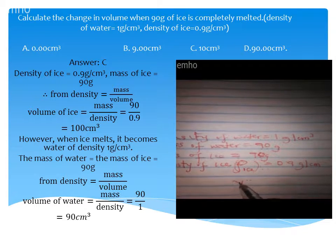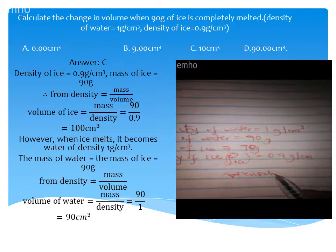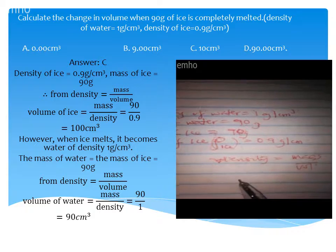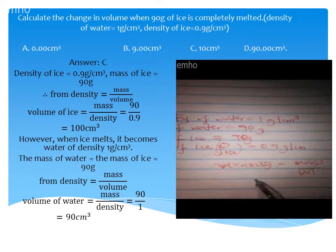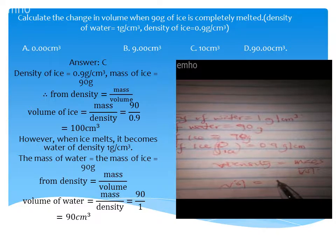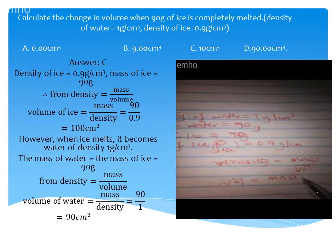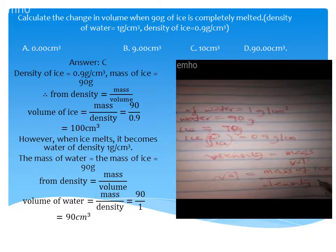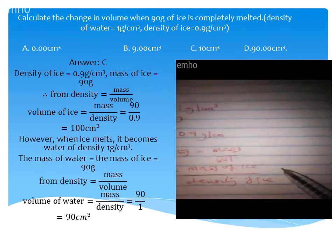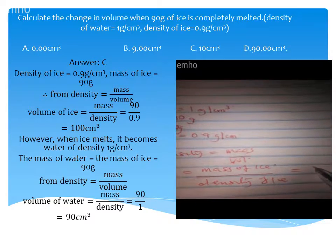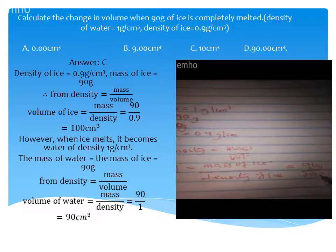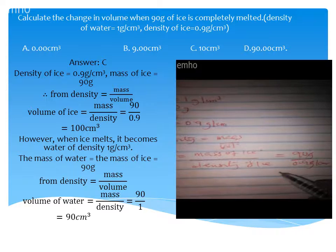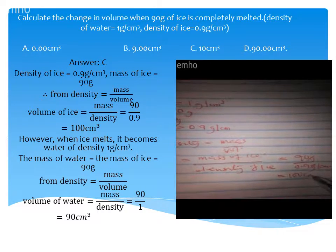We can use these two values to calculate the volume of ice. We know that density is equal to mass over volume, so we can calculate the volume of ice. The volume will be equal to mass of ice over density of ice, which is 90 grams over 0.9 gram per cm³. The grams cancel out, giving us 100 cm³.